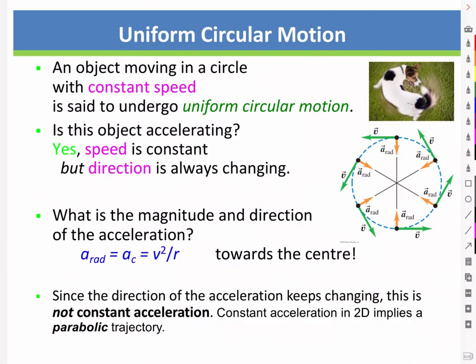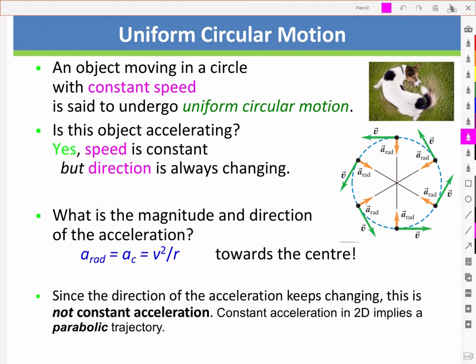One of the things that you need to recognize is that with uniform circular motion, an object is moving with constant speed, but it is still accelerating. So yes, the speed is constant, but the direction and hence velocity is always changing. The acceleration here has a magnitude of v squared over r, and the direction is radially inward, always towards the center.